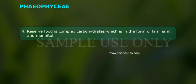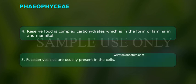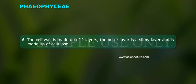Reserve food is complex carbohydrates in the form of laminarin and mannitol. Fucose vesicles are usually present in the cells. The cell wall is made up of two layers; the outer layer is a slimy layer and is made up of cellulose.